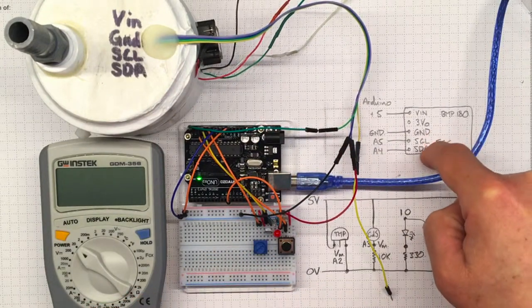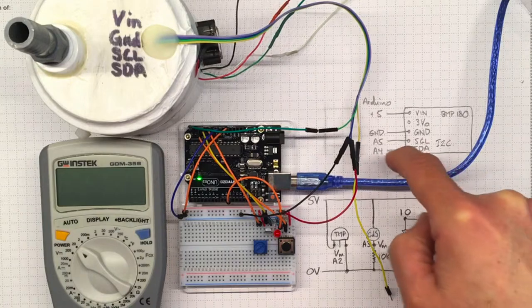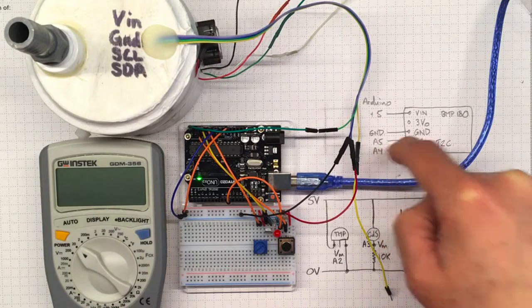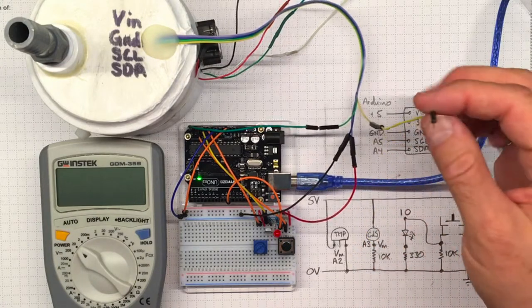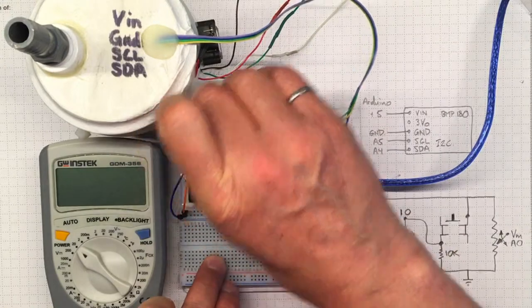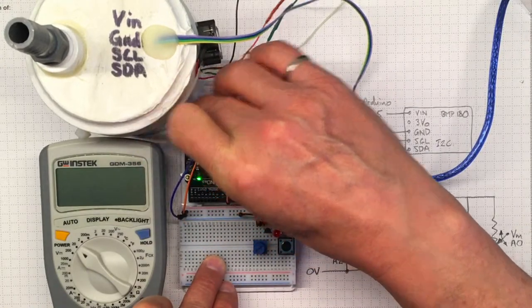And then the last one that's left is the SDA line, the other I2C communication line, and that's going to go to pin A4. It's the yellow one here. So the second to last connection in the line.